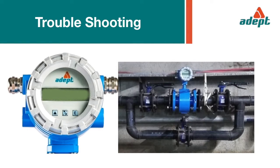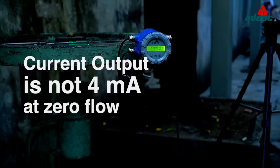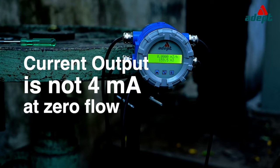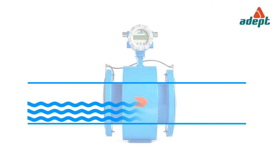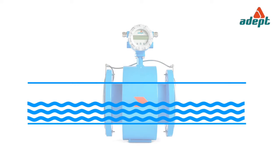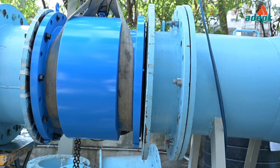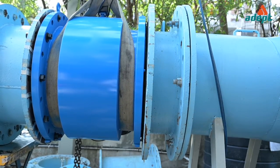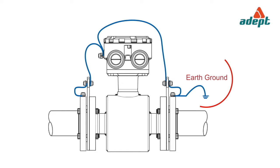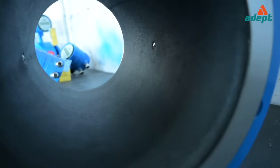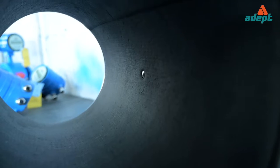Troubleshooting. Current output is not 4 mA at zero flow. Possible causes: flow is not actually zero, flow tube is not mounted correctly, grounding is not done properly, flow tube is not full, or electrodes are contaminated.